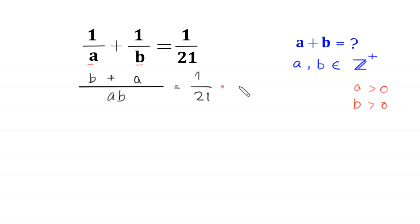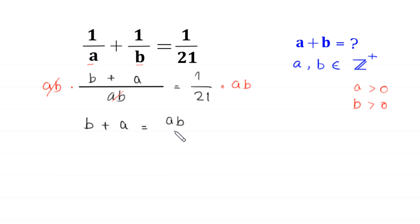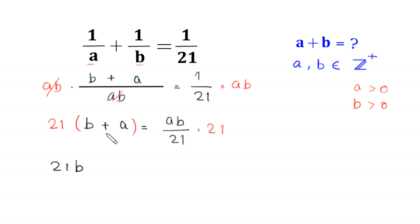We multiply both sides of this equation by a times b. On the left-hand side, the ab cancels, and we are left with b plus a is equal to ab divided by 21. Now we multiply both sides by 21, so on the left-hand side we get 21b plus 21a.